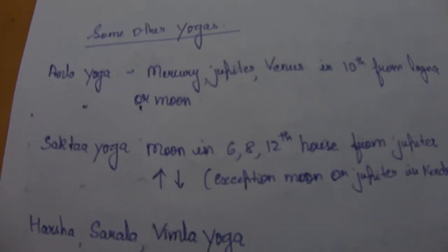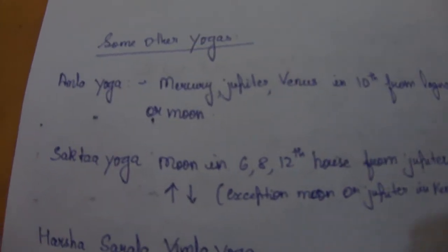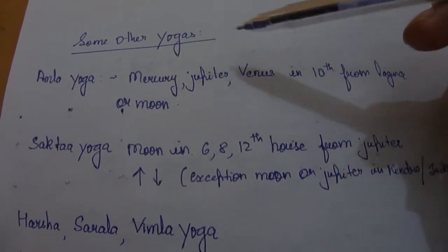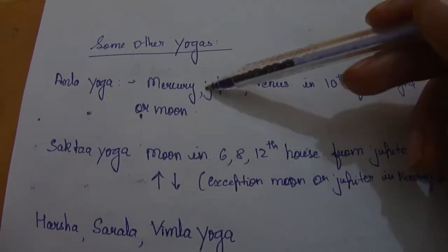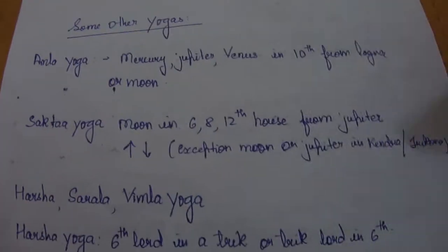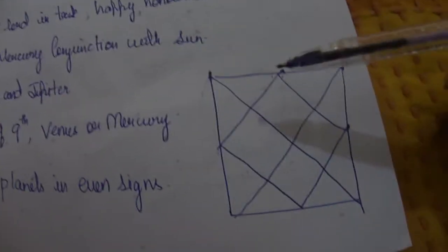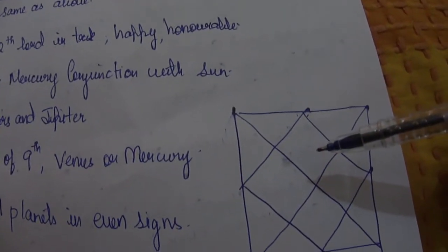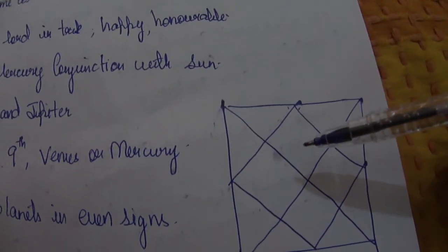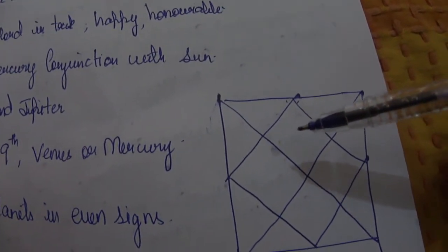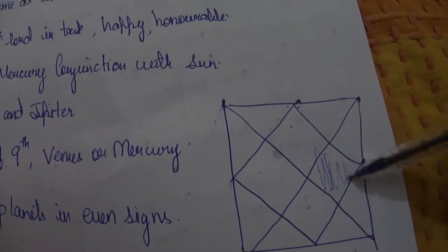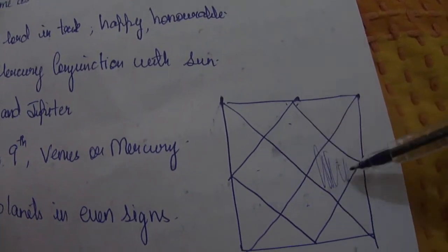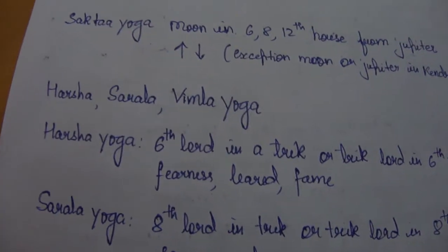Now something called Amla Yoga. If Mercury, Jupiter, or Venus is in the 10th from Lagna or Moon — especially in the 10th house — it gives rise to Amla Yoga. The person with this yoga is considered good and will do well in life.